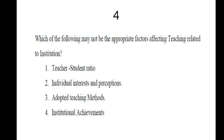Question 4: Which of the following may NOT be an appropriate factor affecting teaching related to the institution? Options: teacher-student ratio, individual interest and perception, adaptive teaching methods, institutional achievements. The second option — individual interest and perception — is the correct answer, as it is not an institutional factor.